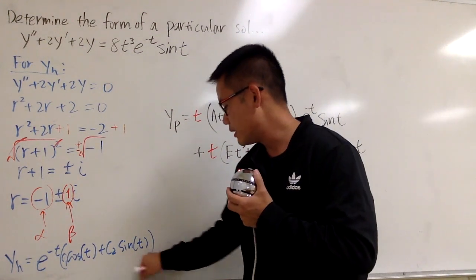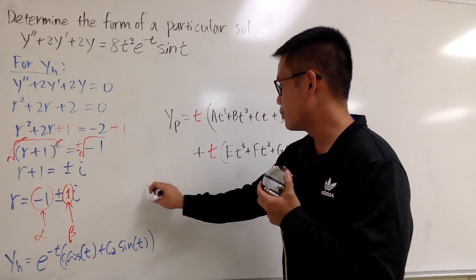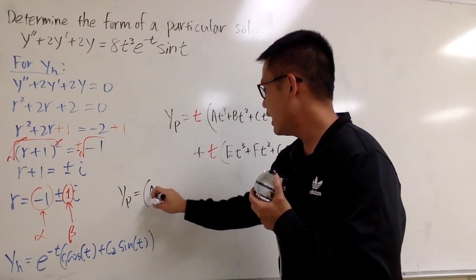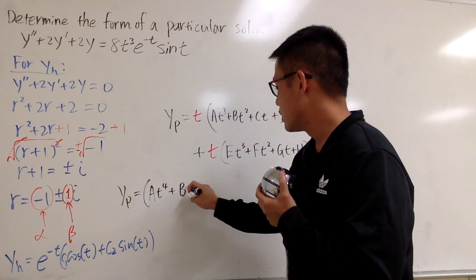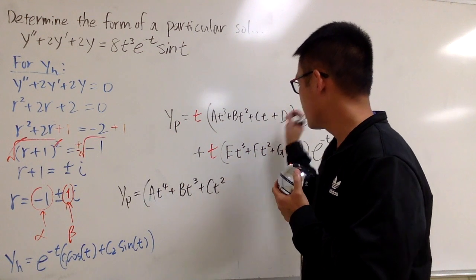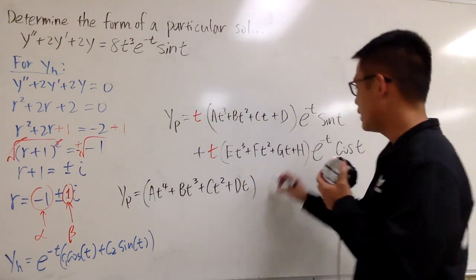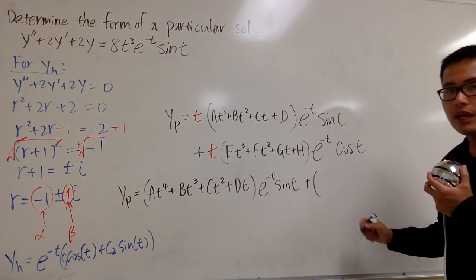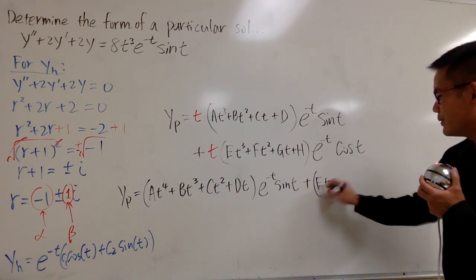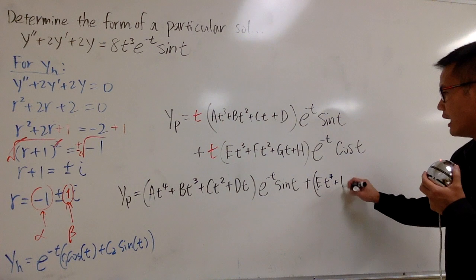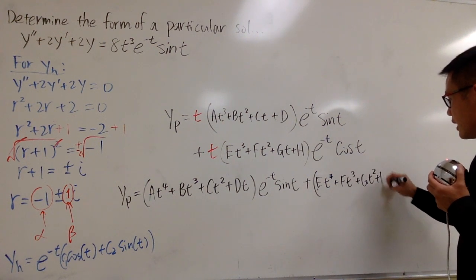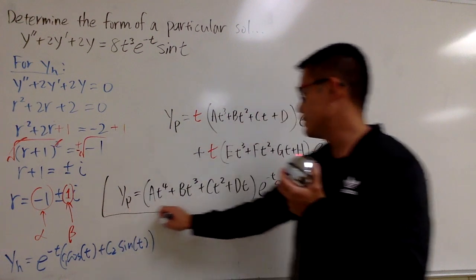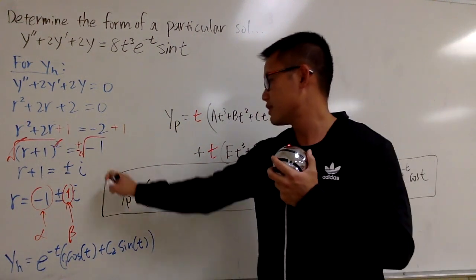Just to finish this up legitimately, I will distribute the t, and I will try to put everything in one line, so let me put it down right here. Here is my yp, and we'll see, this is going to give me at to the fourth power plus bt to the third power plus ct squared plus dt. And then we have e to the negative t times sine t, and then we add it with this, distributing to the parentheses. et to the fourth power plus ft to the third power plus gt squared plus ht, and then that, e to the negative t, cosine t. Alright, so this is the answer. That's it.